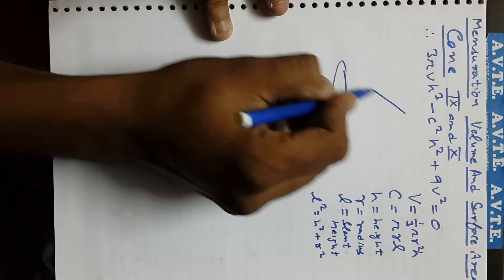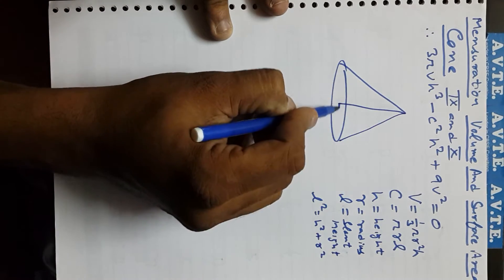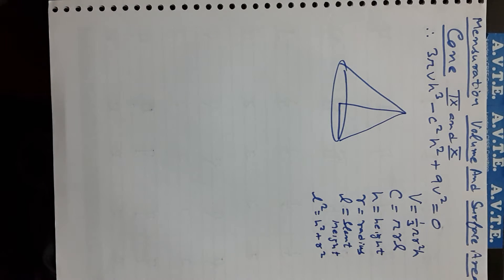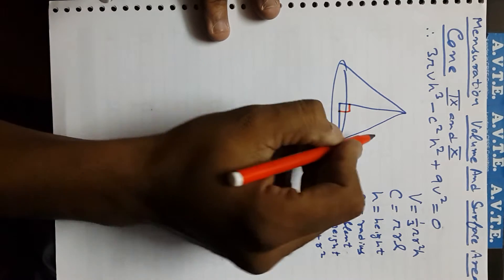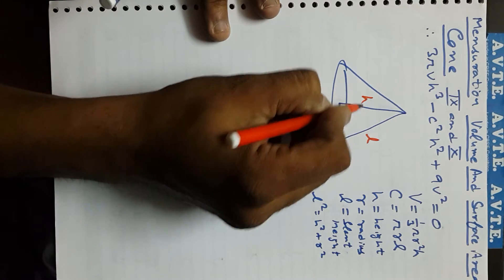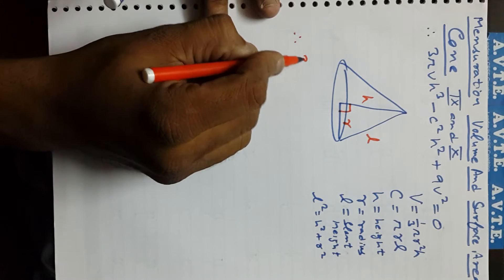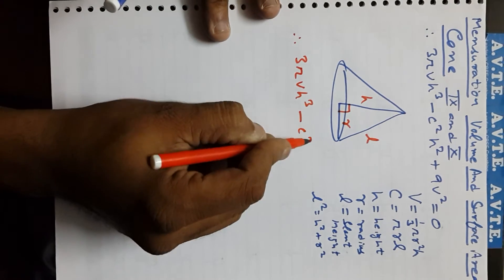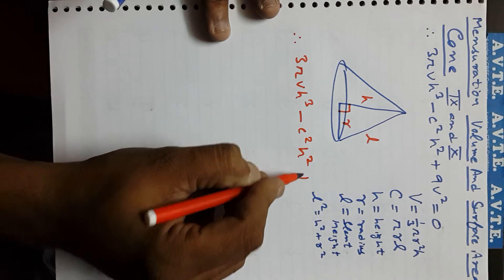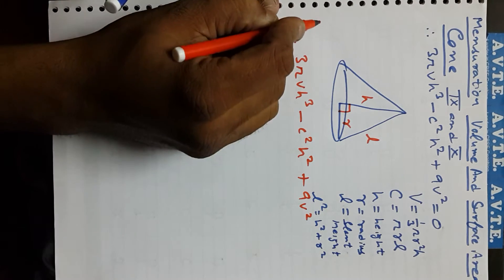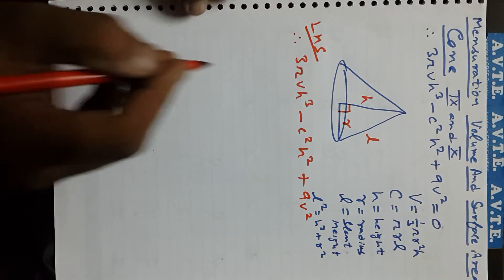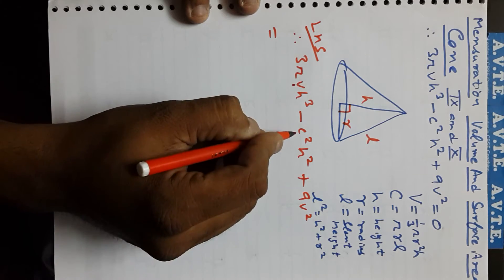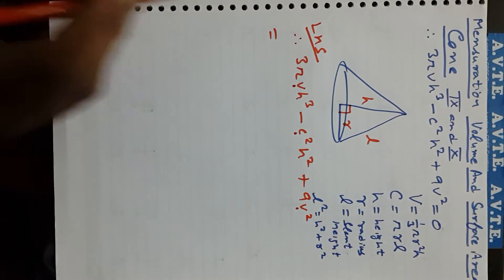Because we know that in this cone, l acts like a hypotenuse, and the other two sides are h and r. So we take the LHS and put in the values of V and C.